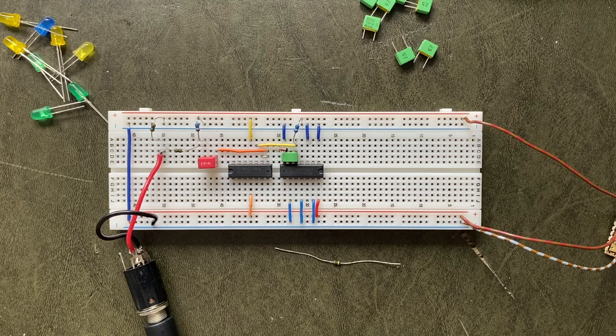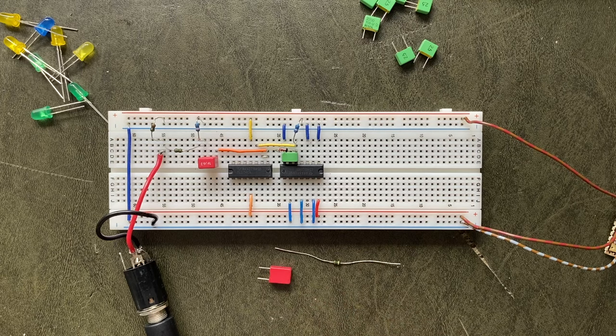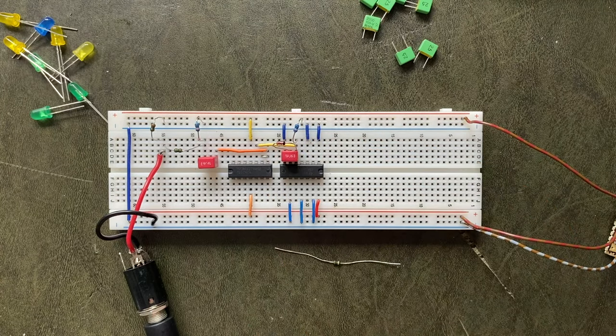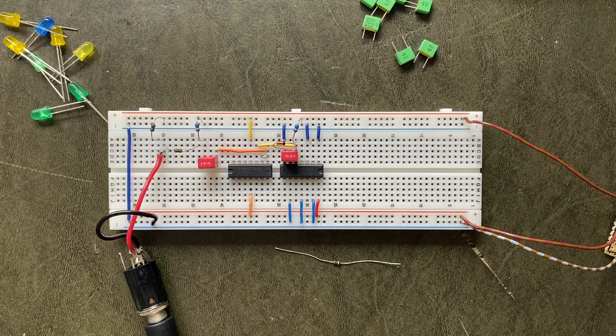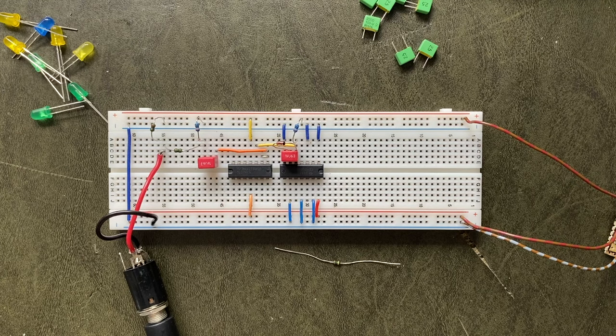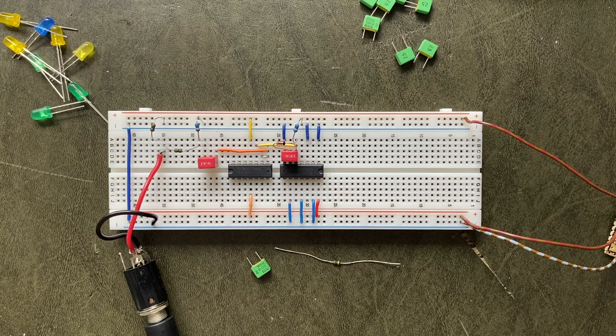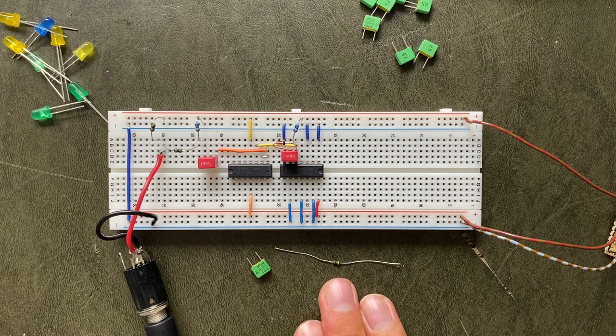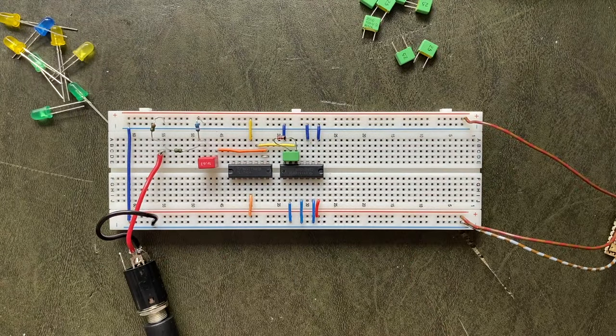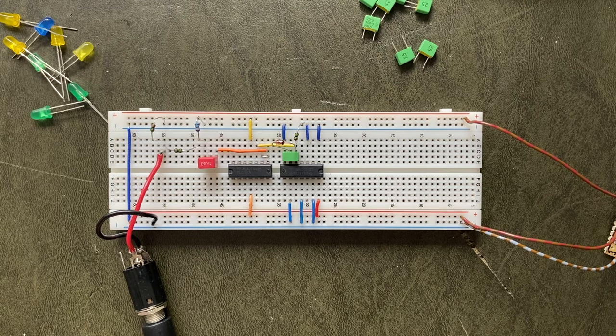Let's try this out by first swapping the 2.2 nanofarad capacitor for a one microfarad one. That's about 450 times bigger. And as you can hear, the frequency is also a lot lower, almost in the LFO range. Next I'll swap the old capacitor back in and then switch our 100k ohm drain resistor for a 1 megaohm one. That's 10 times bigger. And so the pitch isn't lowered as much as before.